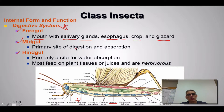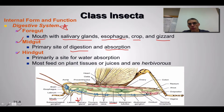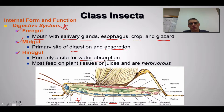In the midgut, once food makes it here, this is going to be the primary site of digestion — breaking down the food — and the absorption of that food. The hindgut, towards the end, is the primary site for water absorption. A large number of these insects feed on plant tissues or juices and are considered herbivores, so there's going to be a lot of water absorption through that type of feeding behavior.